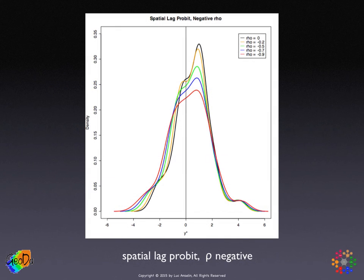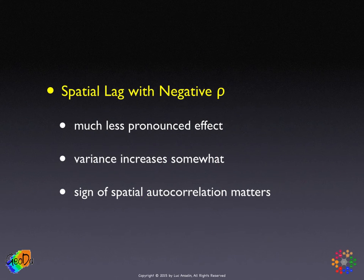However, unlike the linear regression case, the effect of negative spatial autocorrelation is very different. In this simulation with the same spatial autoregressive process, we see primarily an effect on variance — the curves drop but stay roughly centered the same — so there is much less effect on the probability of crossing the threshold, but a pronounced effect on the variance, which increases. Unlike the linear regression case where positive and negative spatial autocorrelation can be treated similarly, in the latent variable model, the sign matters a lot.